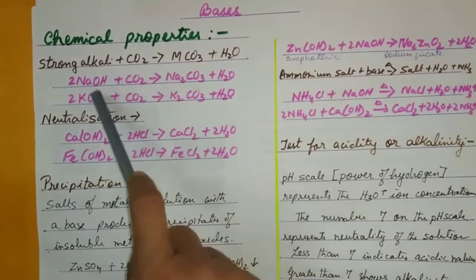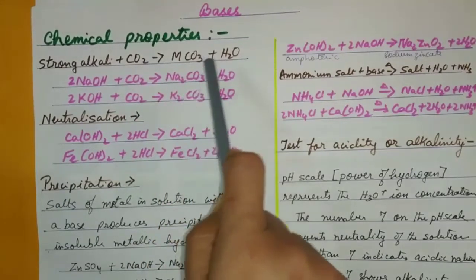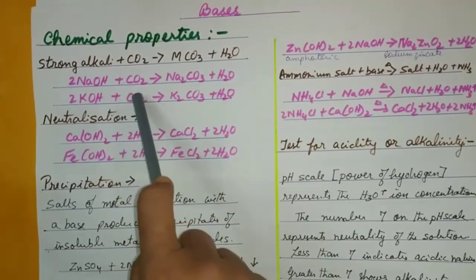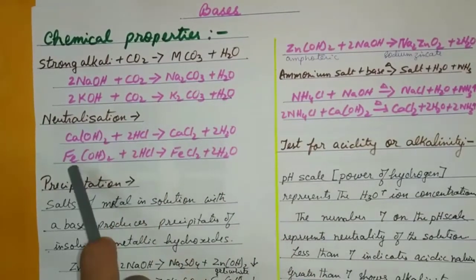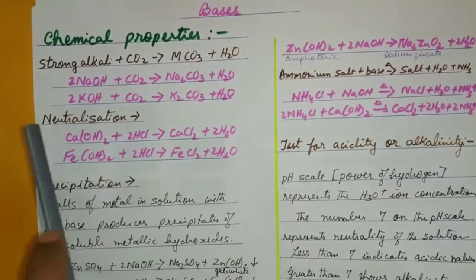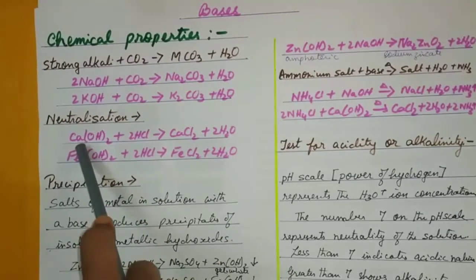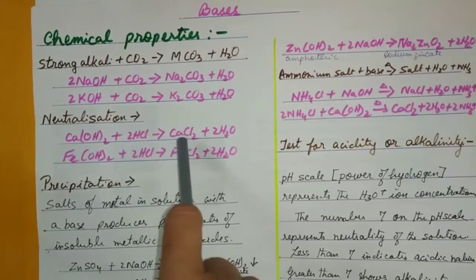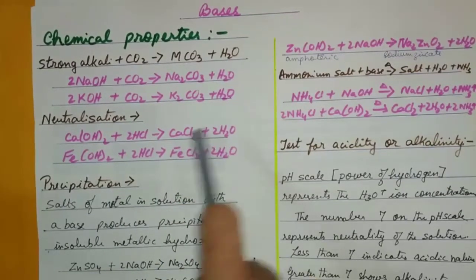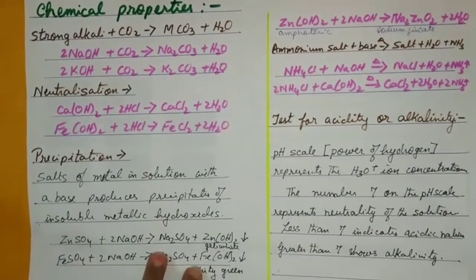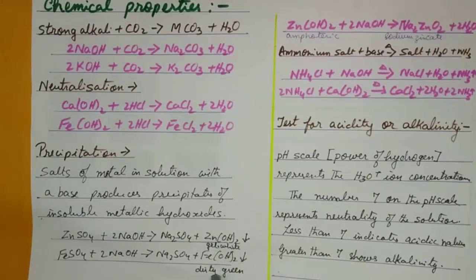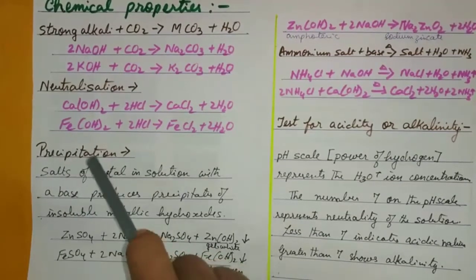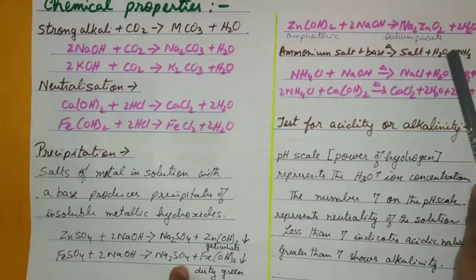Chemical properties: strong alkalis with carbon dioxide give carbonate and water — sodium hydroxide with CO₂ gives sodium carbonate and water. Neutralization: acid plus base gives salt and water — for example, calcium hydroxide with HCl gives calcium chloride and water. Precipitation: salts of metals in solution with a base produce precipitates — dirty green for ferrous hydroxide, white gelatinous for zinc hydroxide, reddish brown for ferric hydroxide, pale blue for copper hydroxide.